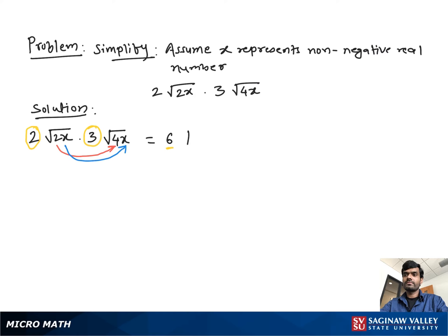So 2 times 3 is 6, then 2 times 4 is 8 and x times x is x square.